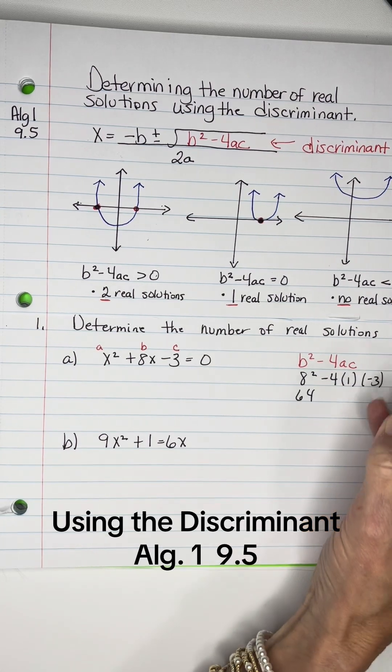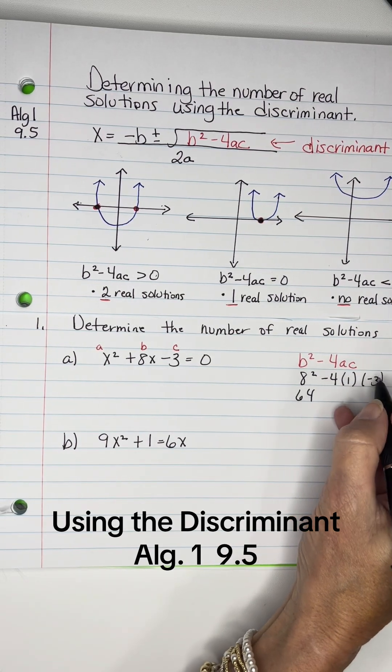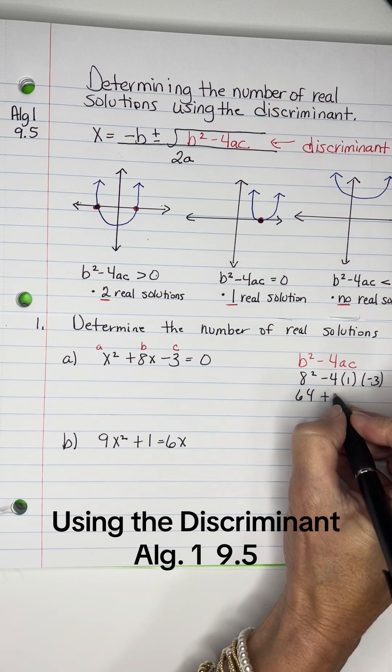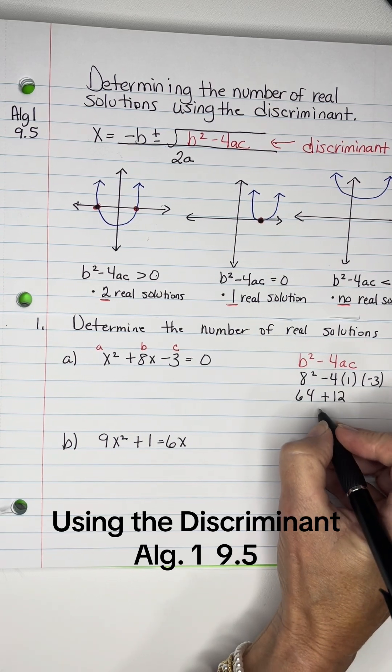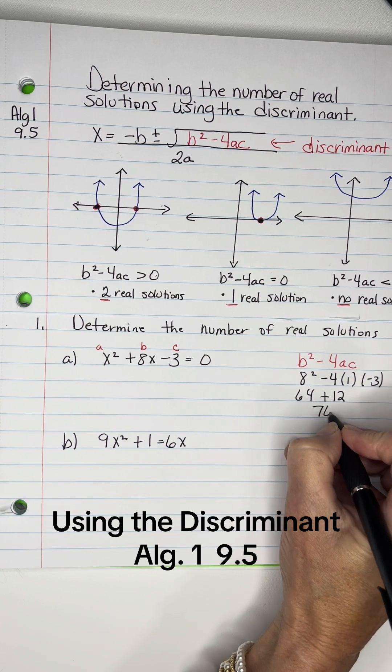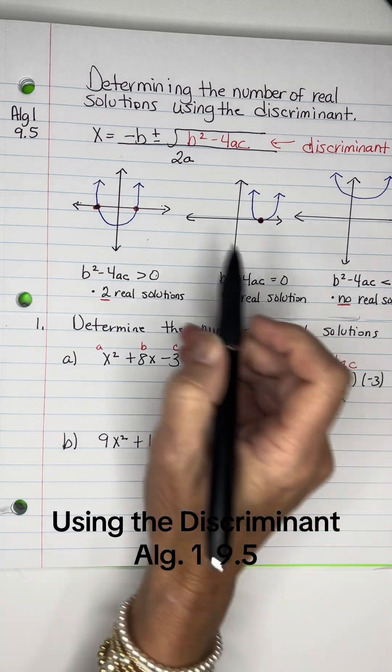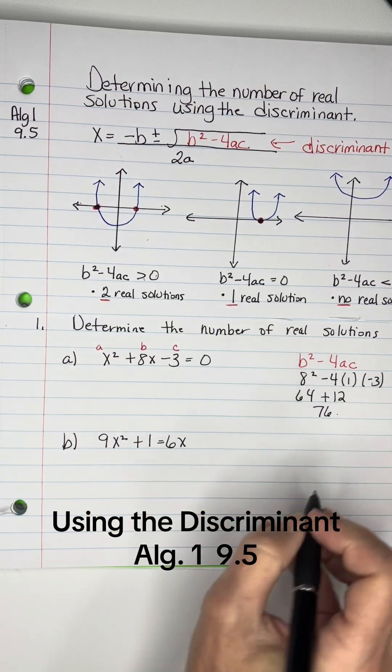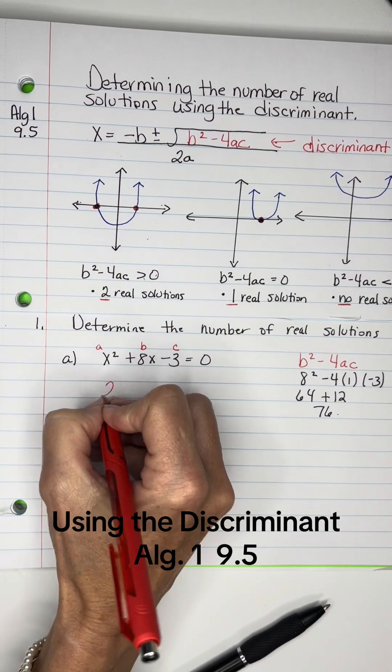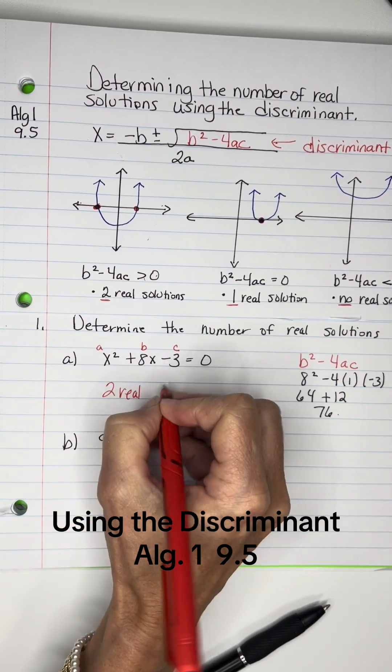So 8 squared is 64. And then negative 4 times 1 times negative 3 is a positive 12. So if you add those together, you're going to get 76. And 76 is a positive number bigger than zero. So on this one, I have two real solutions.